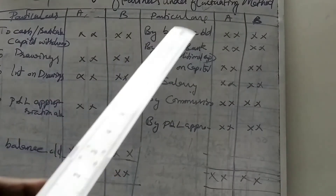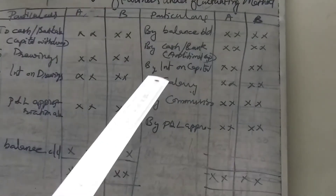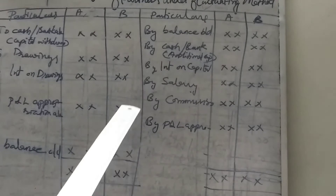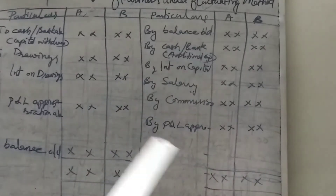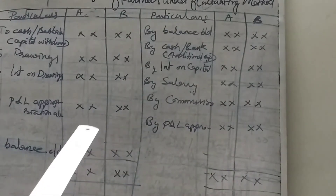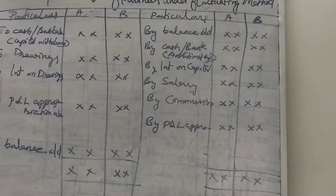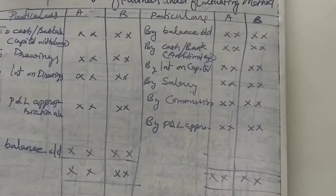See the credit side: opening balance, then additional capital introduced, interest on capital, salary, commission — these are all also there. So all these items are entered in the same account. One account, then we can put all the amount of items, balance, current account balance on the credit side. That's why we can put all the items on the debit side and credit side.